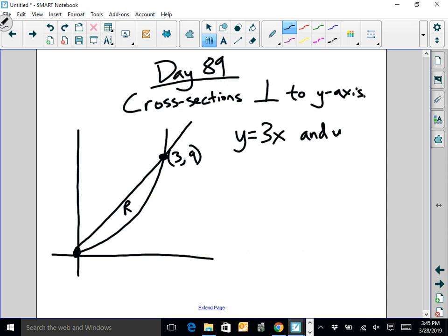Region R is bounded by the functions y equals 3x and y equals x squared. First thing you'd want to do is identify which one is 3x and which one is x squared. That should be pretty easy for you. Just looking at this thing, the linear one has got to be 3x. The one that's a parabola has to be x squared.